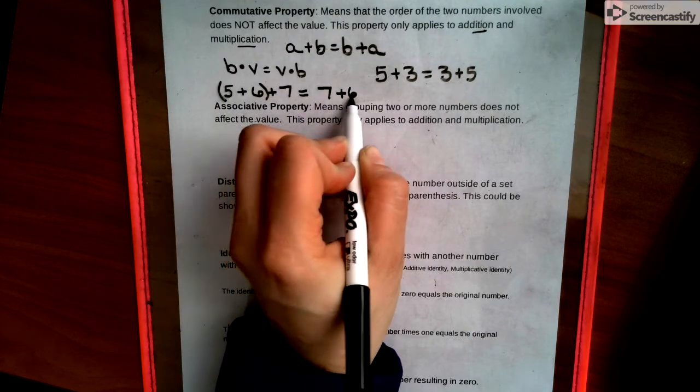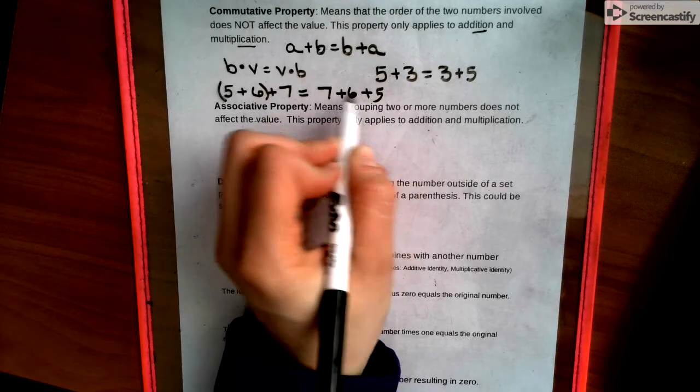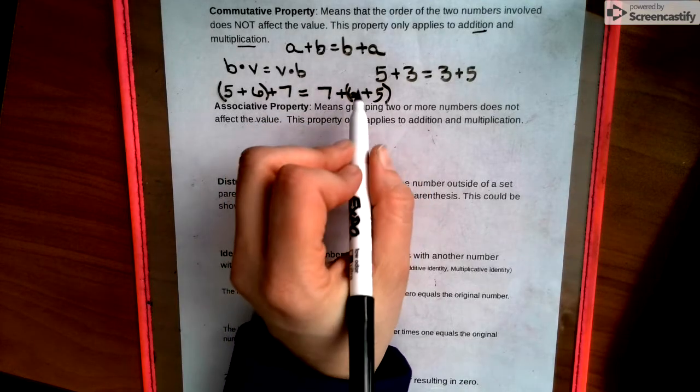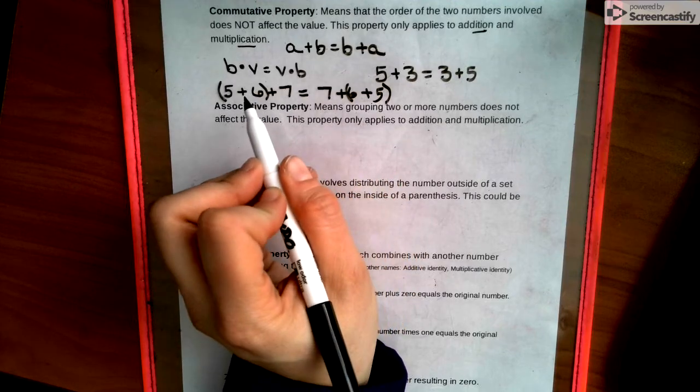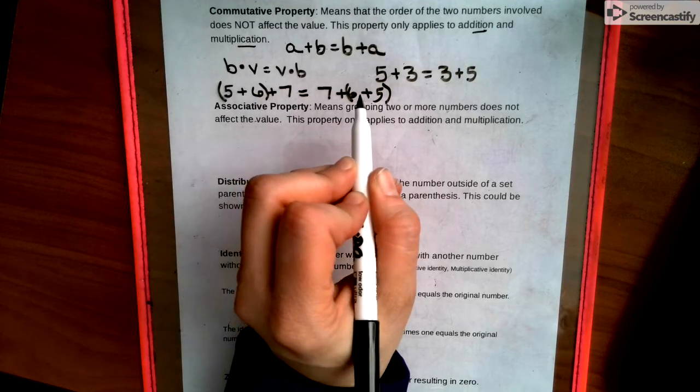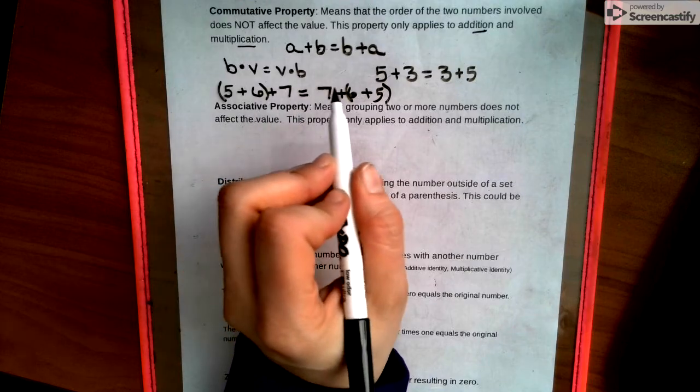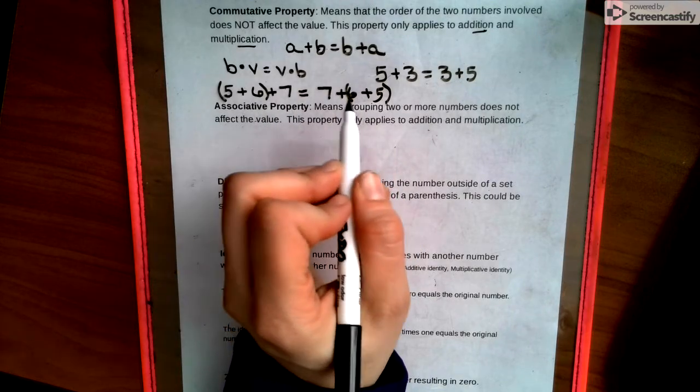plus six plus five and the parentheses shift to the back. But if you notice what's in parentheses is still the same. So this is a sneaky version of a commutative property because really this looks a lot like what we're going to be doing next.